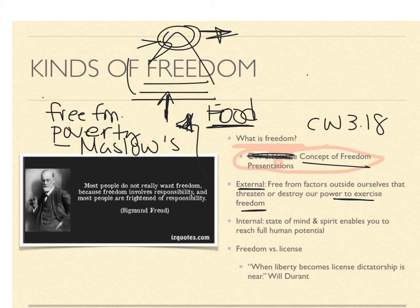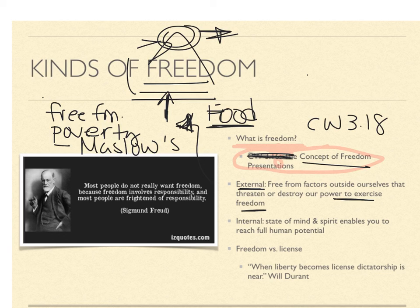Other big ones you can think of are people who are in situations of captivity. We act like slavery doesn't exist anymore, but it does. There are people involved in the sex trade who are kept as slaves. Obviously, there are external factors that can affect our freedom.